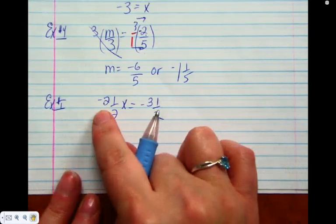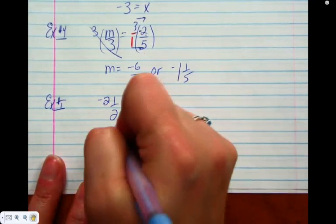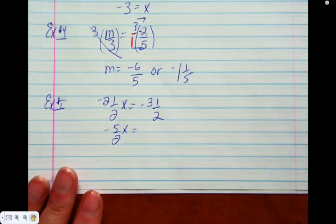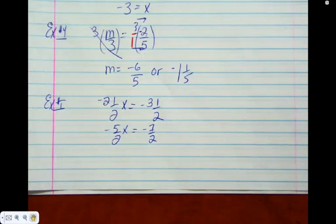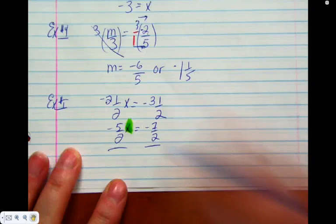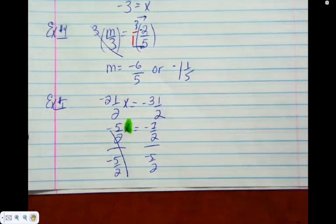So remember, you multiply by the bottom, add to the top. So 2 times 2 plus 1. And the other side, 2 times 3 plus 1. I want to get x by itself. How do I get rid of a multiplication by negative 5 halves? Divide by negative 5 halves. Third question now. How do we divide fractions?